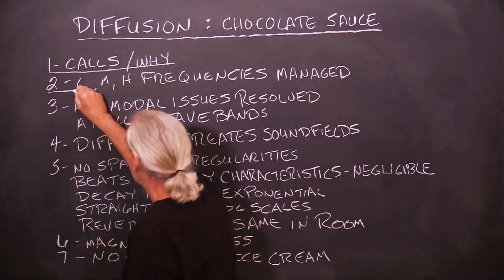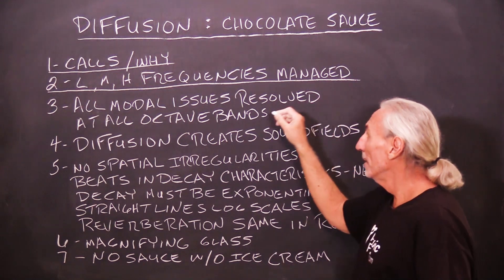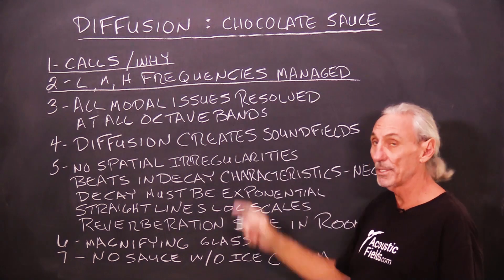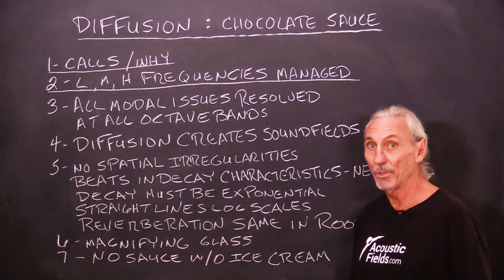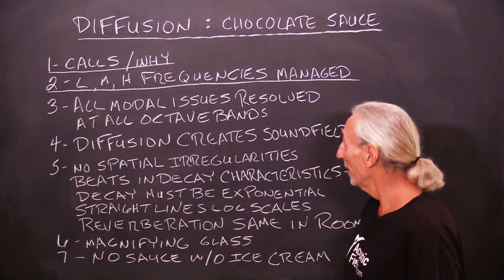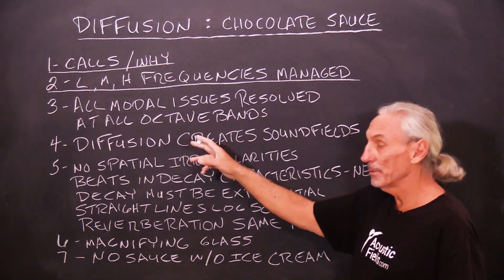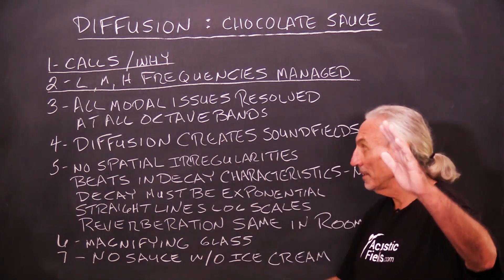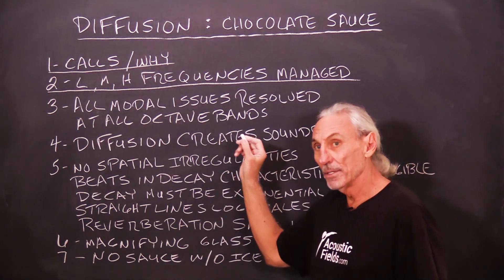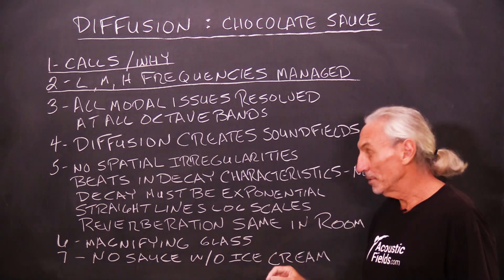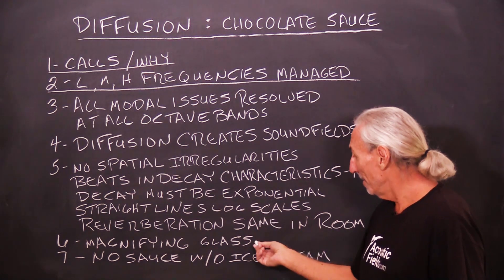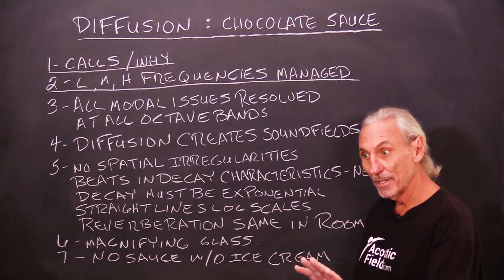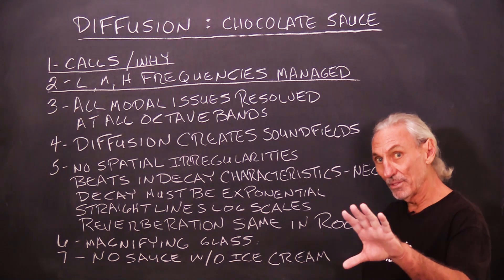You can't use diffusion in any room. You can't put the chocolate sauce without the ice cream — until you have the low mids and high frequencies managed in the room, you just can't. All modal issues must be resolved at all octave bands; you can't have any big swings. You have to realize that diffusers act like a magnifying glass.